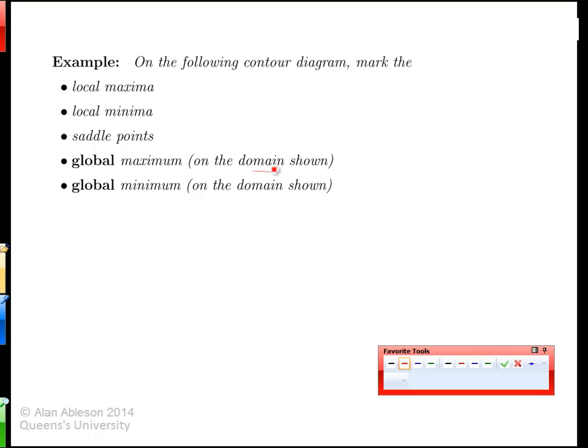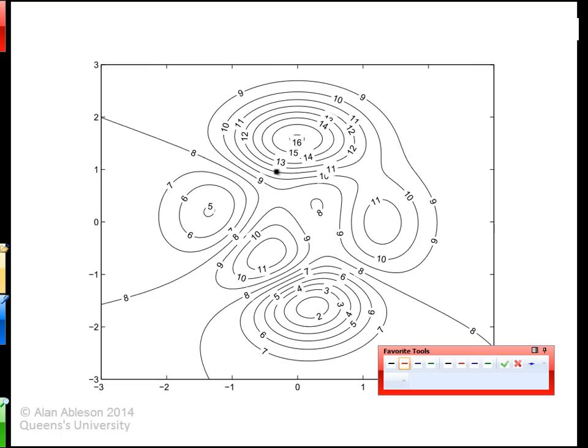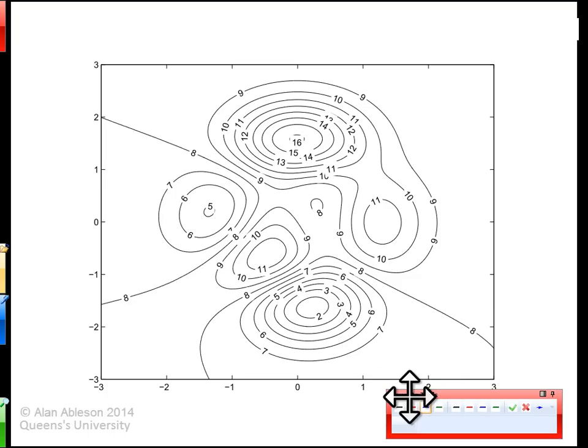So going back to our earlier unit, looking at the boundaries and the critical points. I'll ask you to take a moment and see if you can identify the critical points and their types here from the contour diagram, and see how that works out to start with.